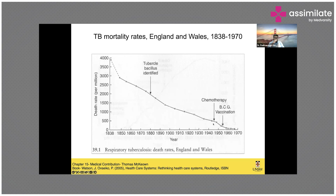Only towards the end of this slide, around 1940–50, were drugs and vaccines discovered. But even before that, there had already been a rapid decline in the number of TB deaths. This will be part of the questionnaire — we will talk more about why this happened in the United Kingdom and what factors contributed to it.